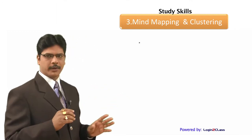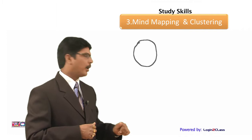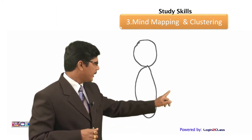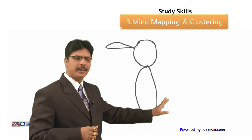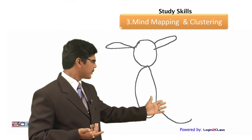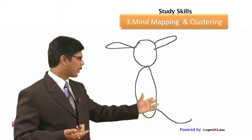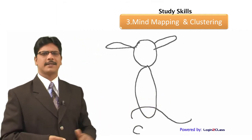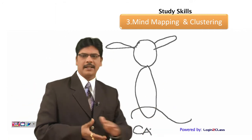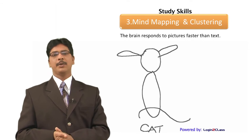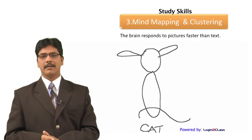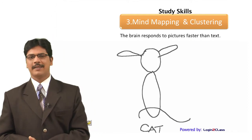Let me give one more example. Tell me what I am writing. What is this? I did not even finish the complete diagram. I think now you understand — just the outlines, that is all. What is it? Yes, it is a cat. Did I write C-A-T there? No, but still you responded so fast because all these are pictures.